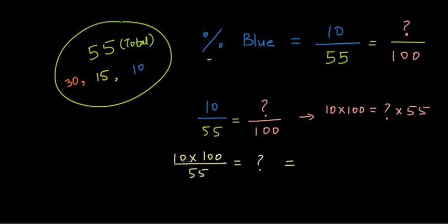And so if you solve this, you get 1000 by 55 or 18.18%. Let me just write it in blue so that we know it's the percentage of blue balls. So the number of blue balls in the bag, this circular bag is 18.18%.